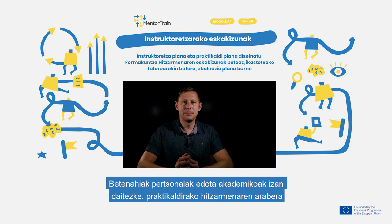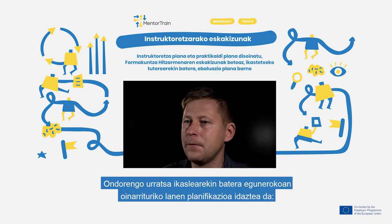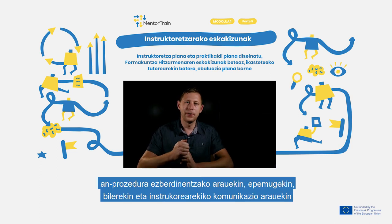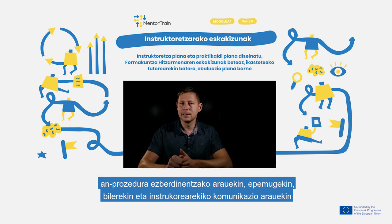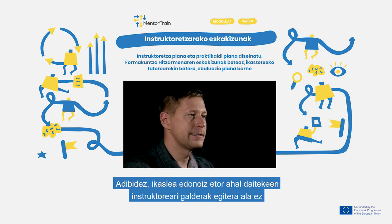Expectations can be personal and academic according to the training agreement. The next step is to write down together with the apprentice a work plan on a daily basis, with rules for different work procedures, deadlines for tasks, meetings, and communication rules with the mentor. For example, whether the apprentice can come to the mentor at any time to ask questions or not.